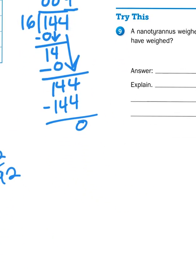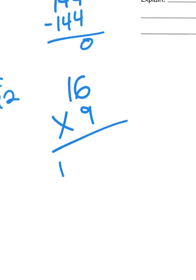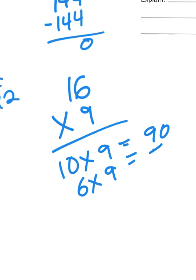Now if I want to check my work, I could take 16 and multiply it by 9 to see if that gives me the correct product. 16 times 9 is the same as saying 6 times 9 and 10 times 9. 10 times 9 is 90. 6 times 9 is 54, and yes that gives us 144.